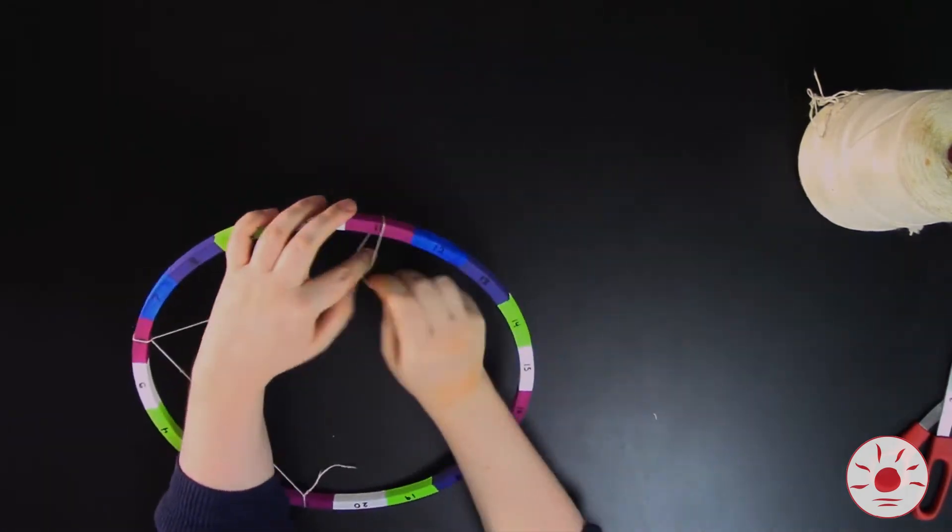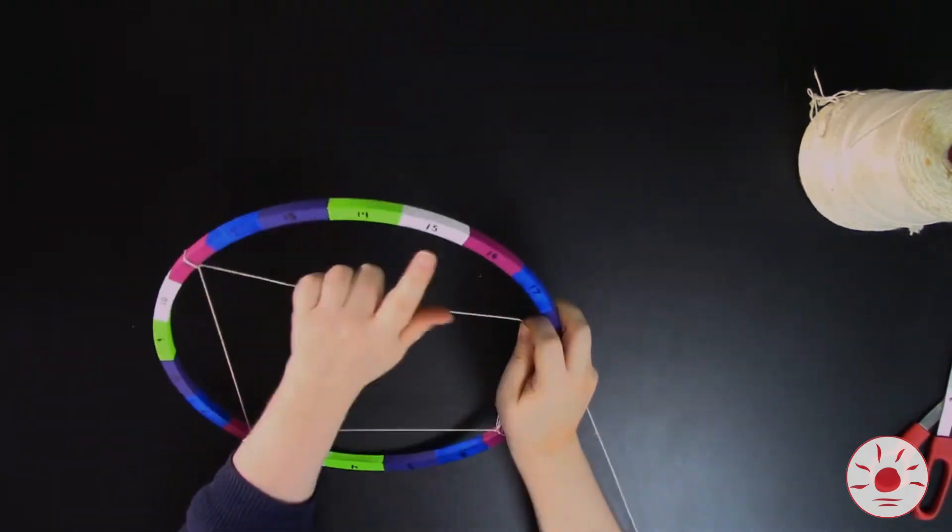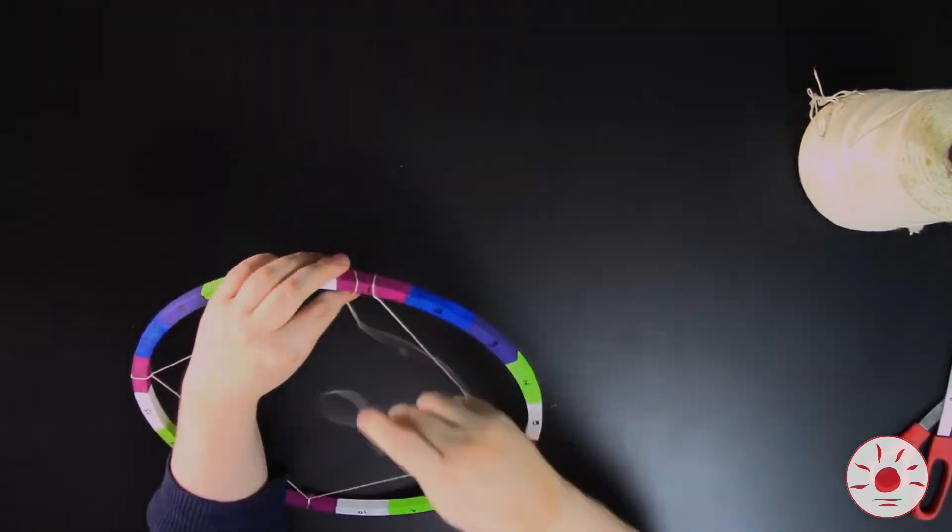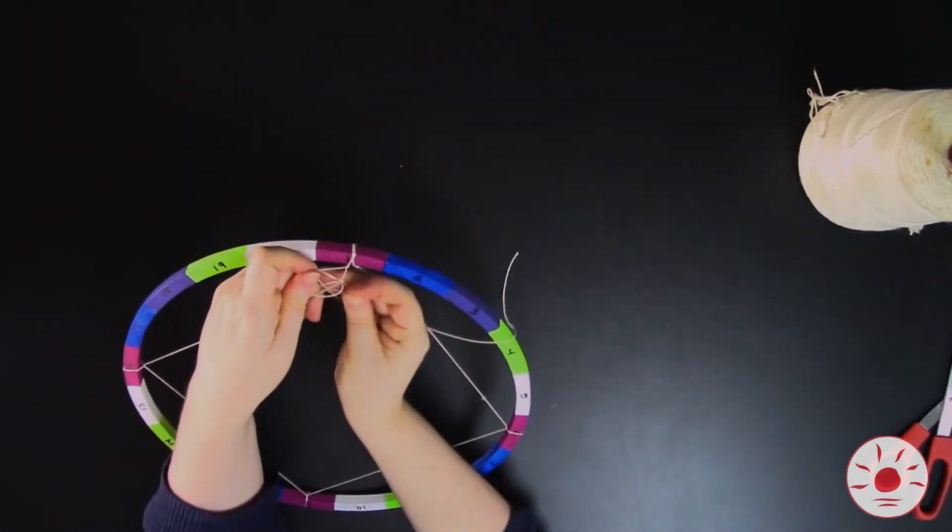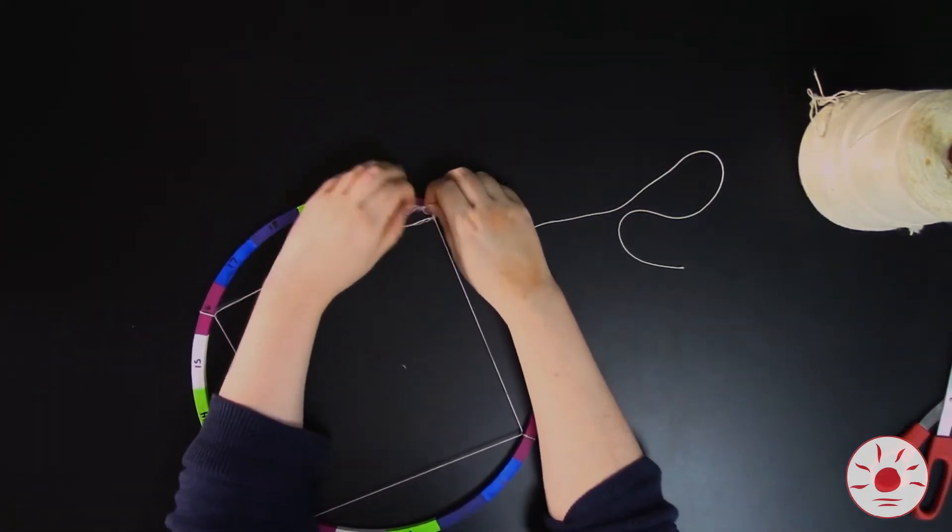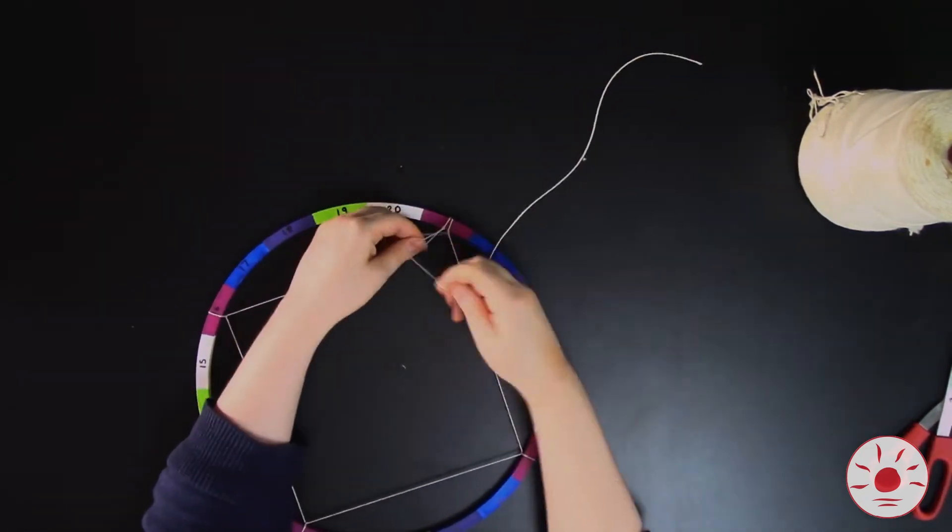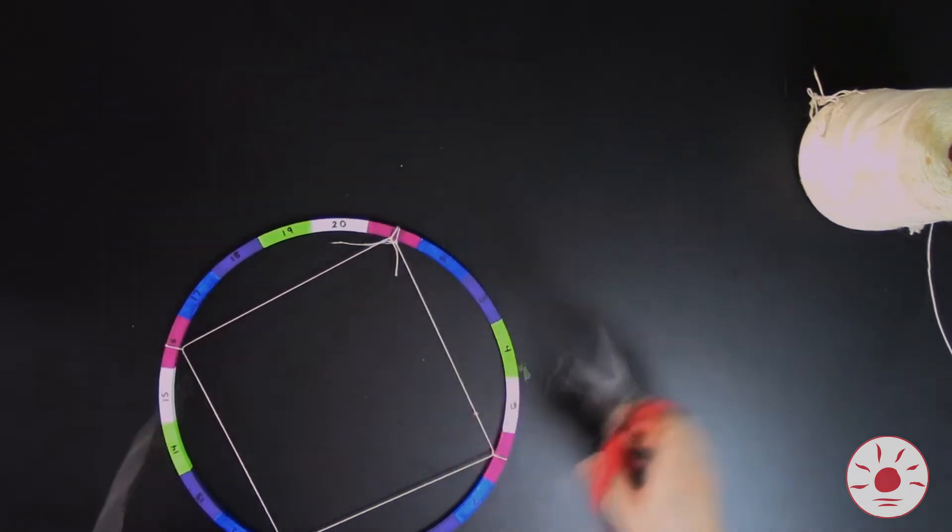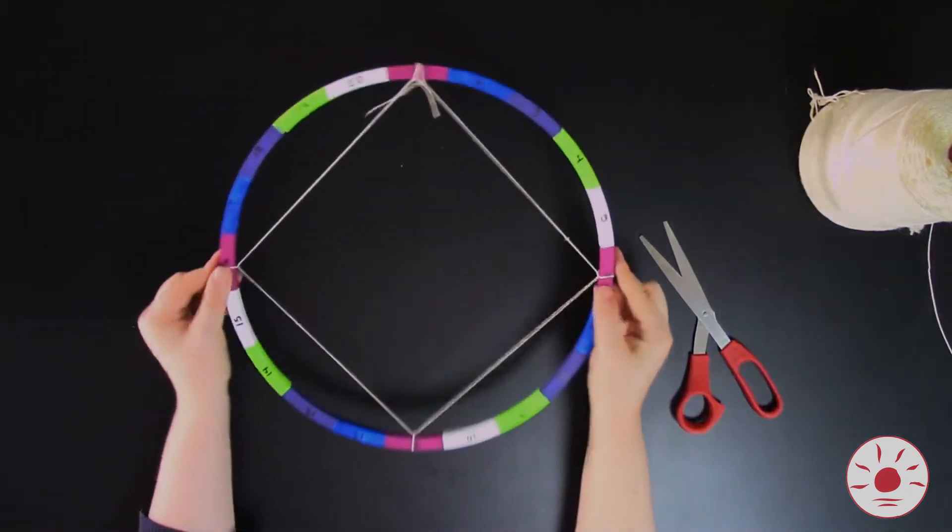Repeat this again until you make it all the way around. You should be back at section 1. This is because 5 goes evenly into 20. How many knots did we tie? We tied the string in 4 places, so that means that 20 divided by 5 is 4.